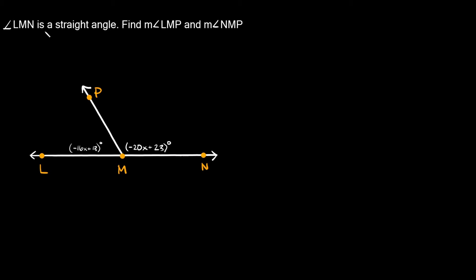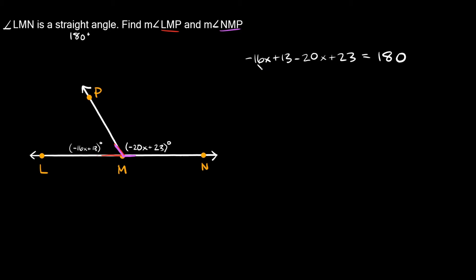Next example: angle LMN is a straight angle, equal to 180 degrees. Find the measure of angle LMP and angle NMP. When we add both angles they should equal 180 degrees. The expressions are negative 16x + 13 and negative 20x + 23, and their sum equals 180 degrees.